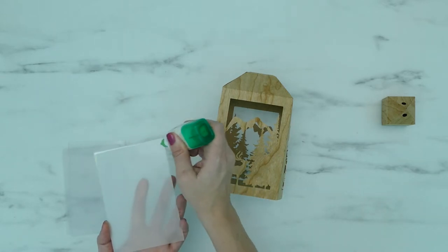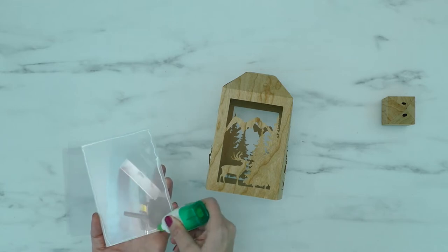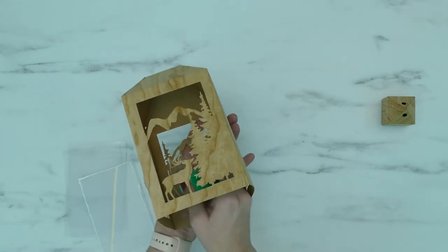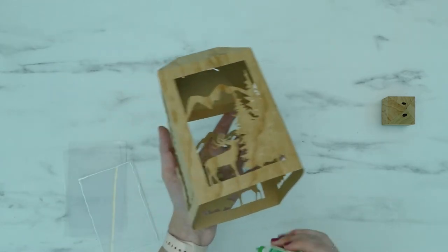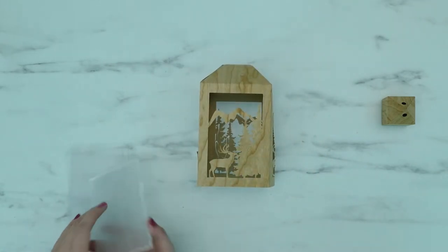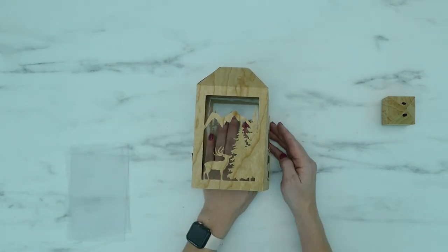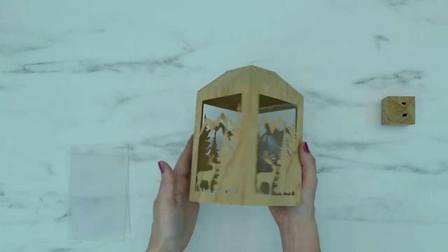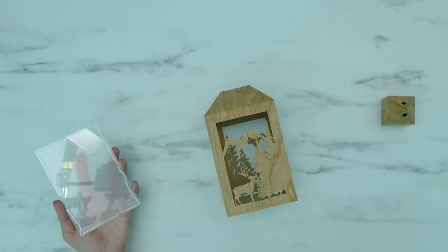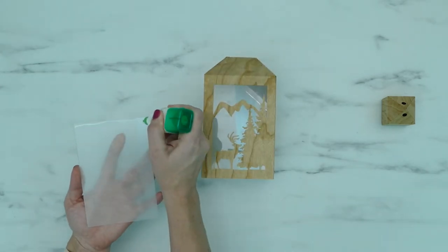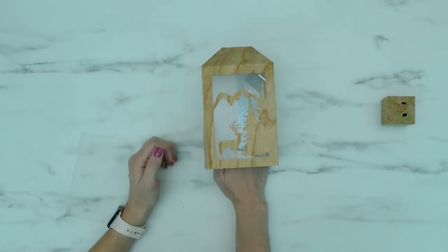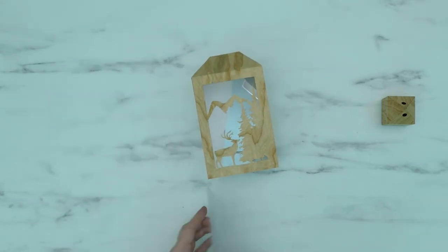Add some glue along the edges of the acrylic panels. You can also reach inside the lantern and put a little glue on the trees and mountains. Carefully glue the acrylic panel inside of your lantern. Once the glue is mostly dry, you can move on to the next panel, and then repeat until all four panels are glued in place.